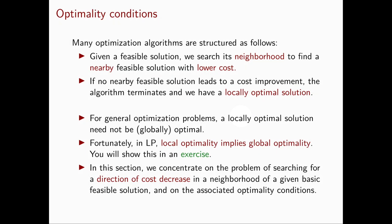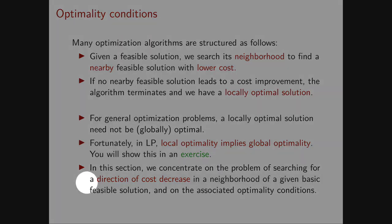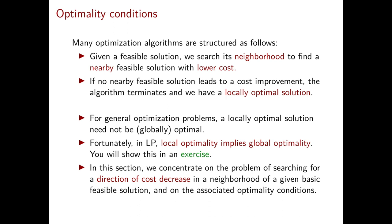Generally, a local optimal solution is not globally optimal. However, in linear programming, this is the case: local optimality implies global optimality. In this section, we will follow a similar line of thought for the linear programming problem. Given a basic feasible solution, we will search for a direction of cost decrease in a specific neighborhood of our solution. This will lead us to the associated optimality conditions.